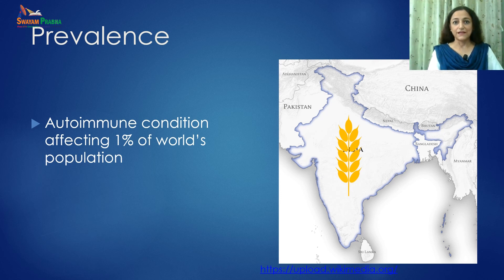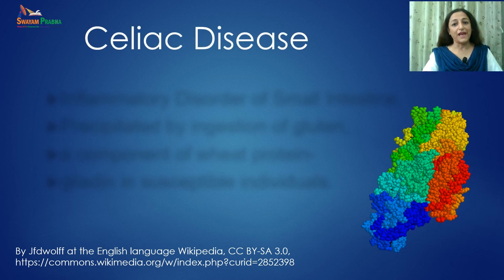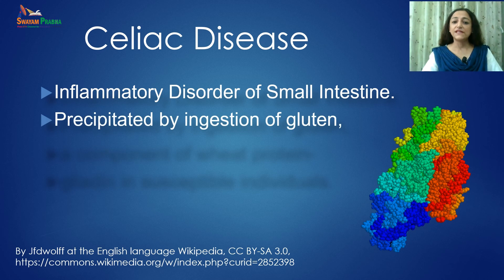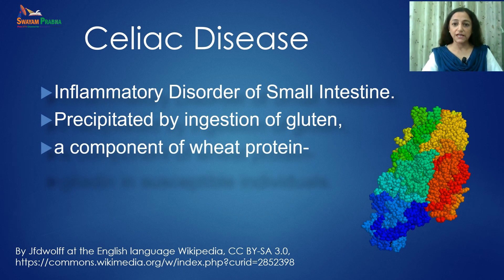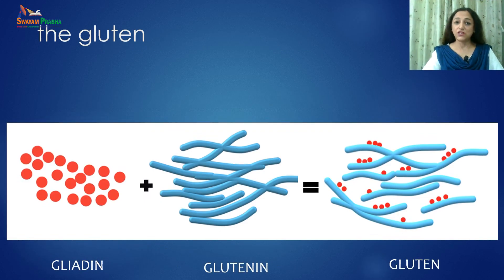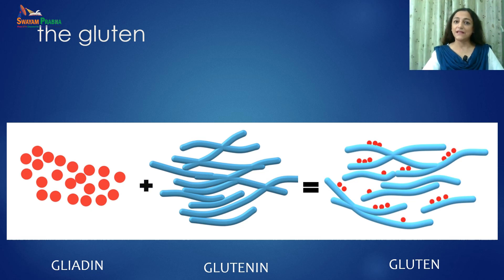So, what is Celiac Disease? Celiac Disease is also known as gluten-sensitive enteropathy. It is an inflammatory disorder of the small intestine which is precipitated by ingestion of gluten, a component of wheat protein. The part of gluten called gliadin evokes a reaction in susceptible individuals. It is a lifelong condition where the immune system mistakes gliadin as a threat and produces antibodies against its own system, damaging the healthy cells of the intestines.